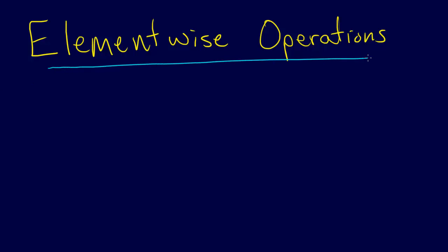I just want to make a quick note about element-wise operations. This is just something you need to be aware of when you're programming. For example, let's say we have a squared. What a squared means is you take a times a, and of course that can only be done if the dimensions of a match.